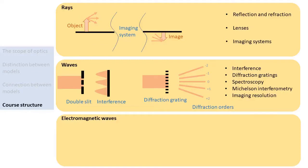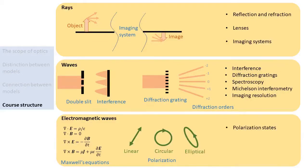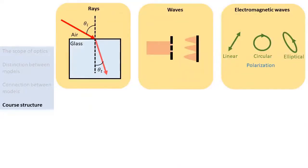The electromagnetic wave model is the most complete classical model of light. It states that light consists of electromagnetic fields that obey Maxwell's equations. Because the fields are vectorial, it explains why light can have a certain polarization. It can be used to derive the reflection and transmission coefficients for light of a certain polarization striking an interface, and it can be used to calculate the radiation pressure of light. These are the three models of light, which can more or less be thought of as separate from each other — nonetheless, at the same time, they are also closely interconnected.